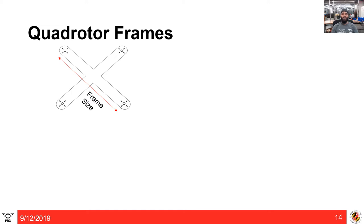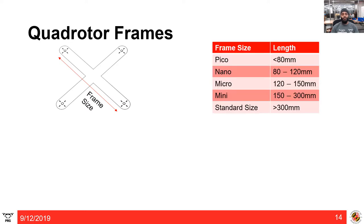A quadrotor frame is the armor for all your sensitive electrical components — it keeps them together, so it is essential to have a rugged and durable frame. The frame size is defined as the diagonal distance between opposite motors; for example, a '150 frame' means the diagonal length is 150 mm. Common size categories in the community are pico, nano, micro, mini, and standard.